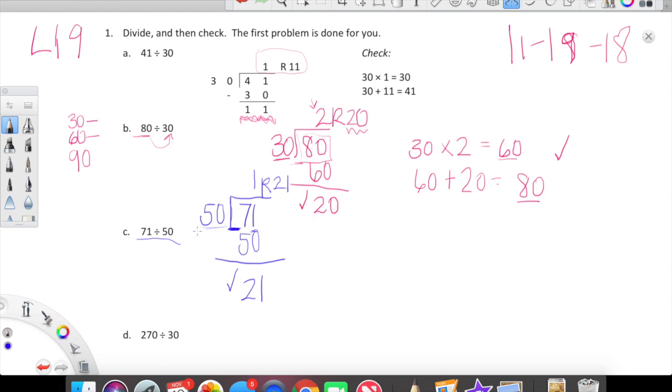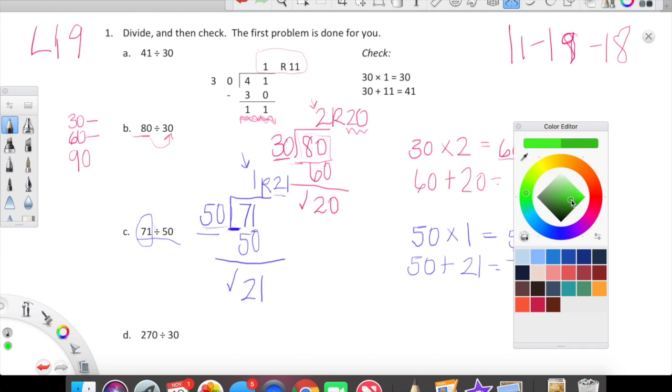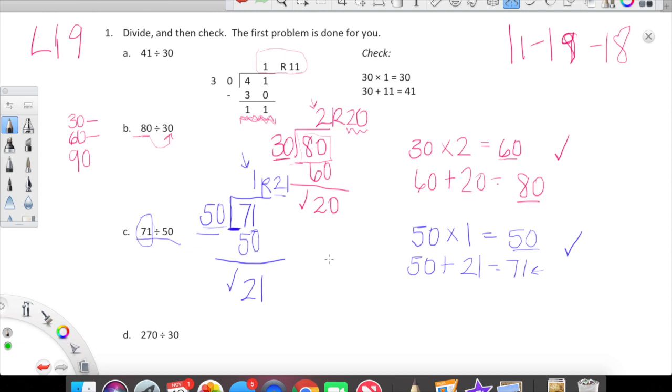But we're not finished yet - we're going to do our check step. Check step looks like this: we're going to multiply 50, because that's what we were dividing by, times 1, our quotient. Quotient, remember, is the fancy word for the answer to a division problem. So we're going to do 50 times 1, which is of course 50. And now we're going to take this 50 and we're going to add our remainder - our remainder of course was 21. And we're going to hope that this number is the same as this number, whatever we were dividing: the number 71 inside the house, of course. Great, so we're all good.